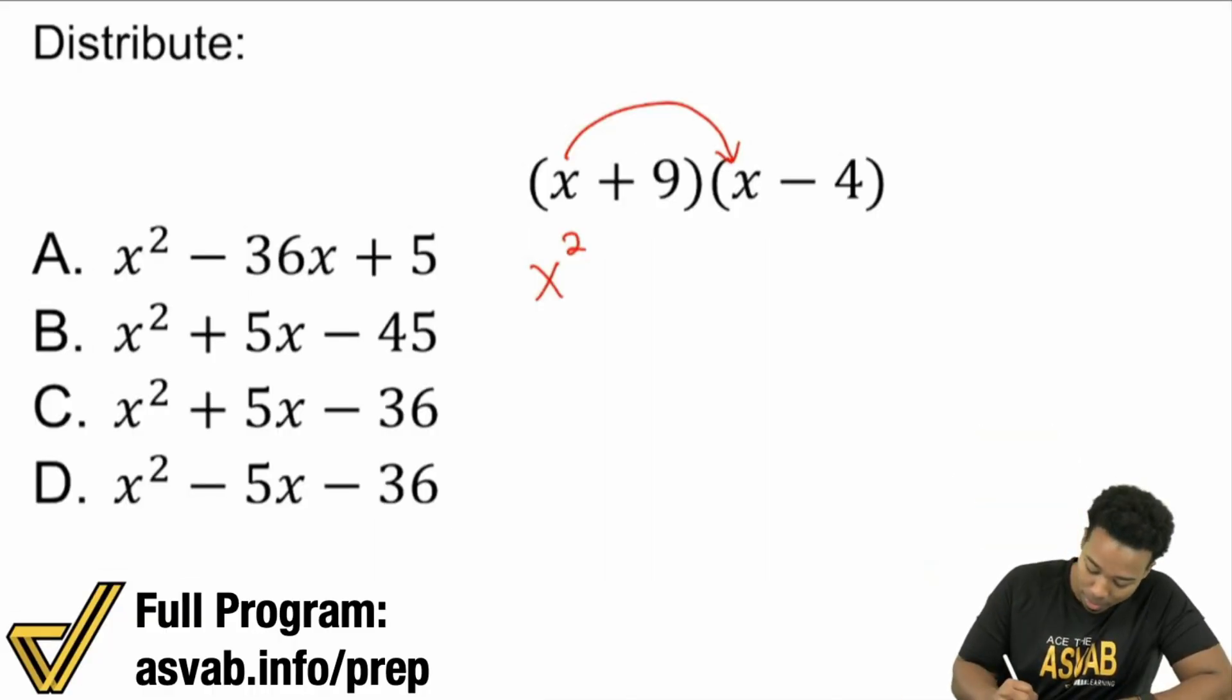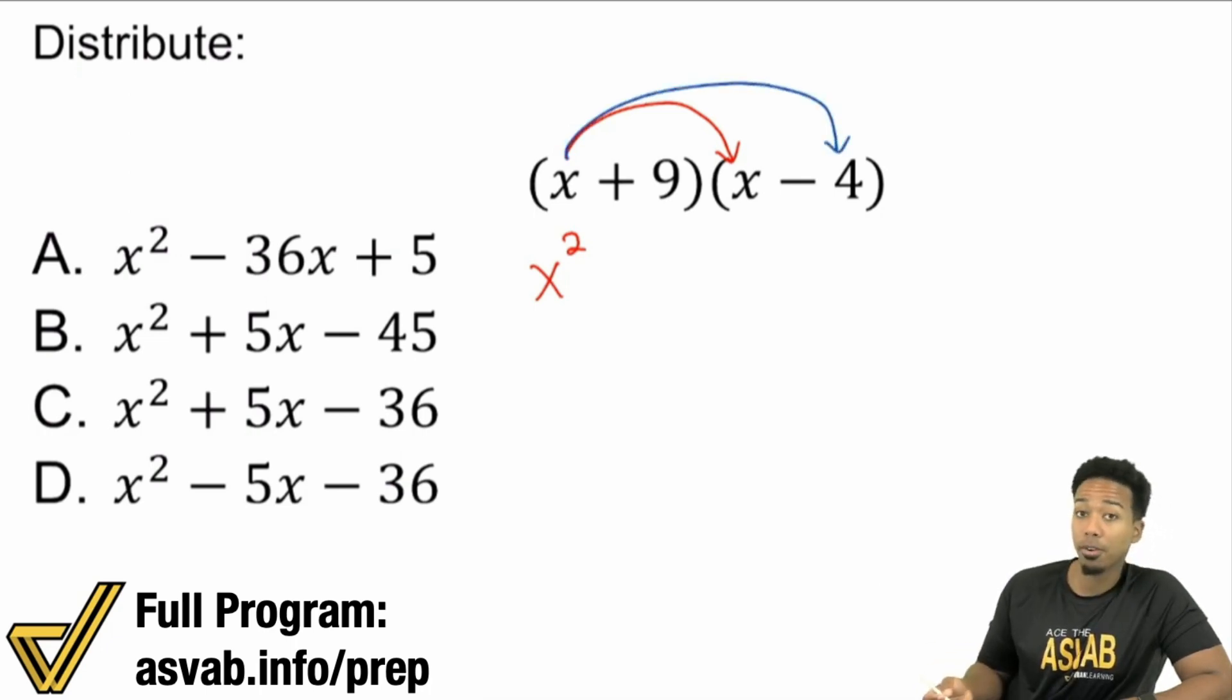So then, make sure that that x multiplies with that x, and also multiplies with that minus 4. So negative 4, multiply by x. First, keep it cool. Start with the sign. A positive times a negative is a negative. A 4 times an x, well, there's no number in front of the x. There is a 1 there. So 1 times 4 is just going to be 4. There's no other variable, so just repeat the x. Then, you'll go ahead and keep moving here.